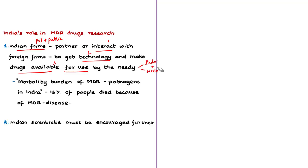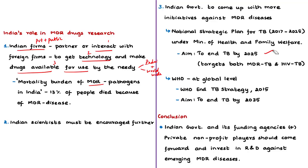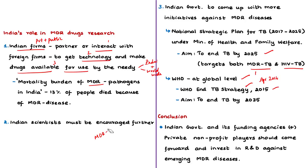The Indian government is also trying to come up with initiatives to fight against MDR diseases. To reduce the burden of MDR tuberculosis, the Ministry of Health and Family Welfare developed the National Strategic Plan for Tuberculosis for the period 2017 to 2025. The goal of this NSP is to end TB by 2025, targeting both drug-resistant TB and HIV-resistant TB. At the global level, the World Health Organization passed a resolution in May 2014, known as the WHO End TB Strategy, to end the global TB epidemic.